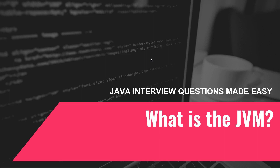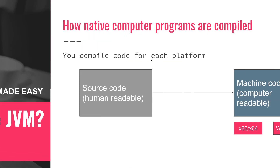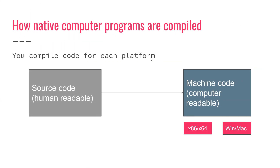We need to understand how computer programs get translated from source code to machine code. For native computer programming languages like C or C++, this transformation is one step only: you have the source code, you compile it, and you get machine code. Machine code is dependent on the operating system and on the CPU architecture.